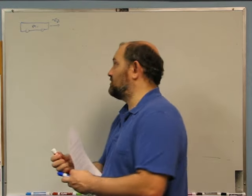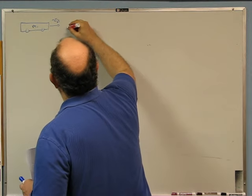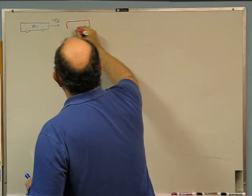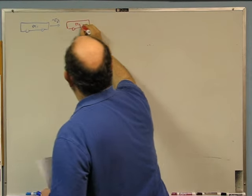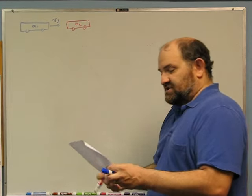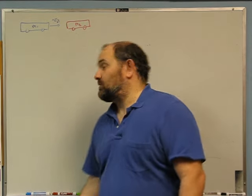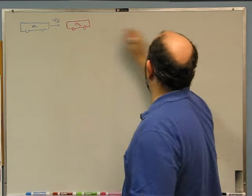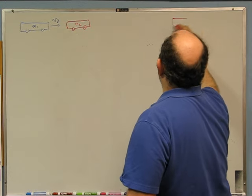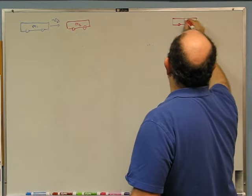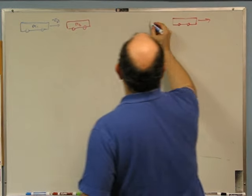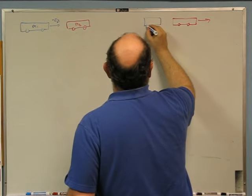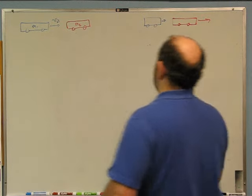There's a second cart of mass m2 at rest. The collision between the two is elastic, which means energy and momentum will be conserved. So here's cart m2. The collision is elastic. What is the final velocity of both carts? This is before; I'm going to draw after over here. So cart m2 will go out at some velocity, and cart m1 after the collision will also go out at some velocity.